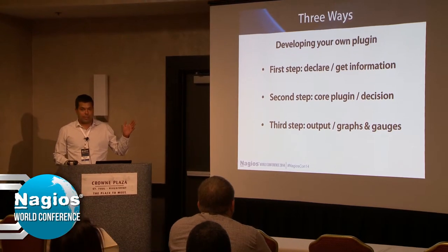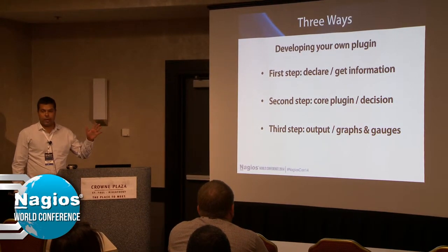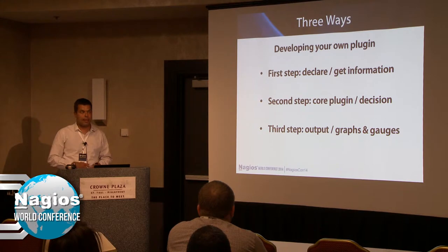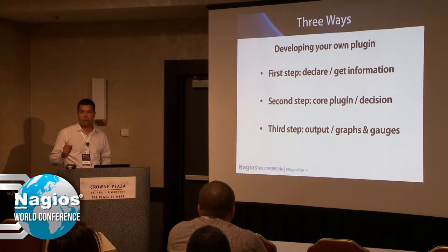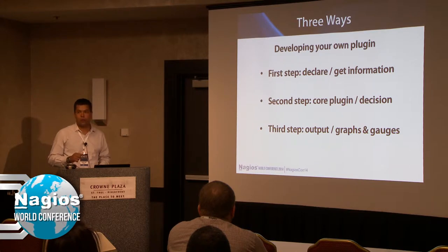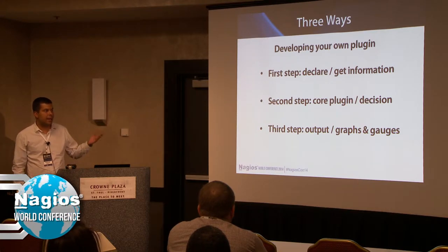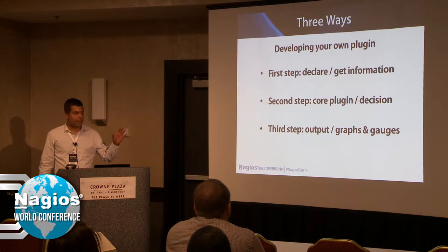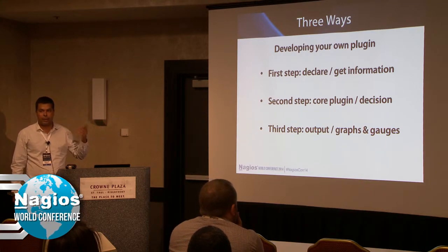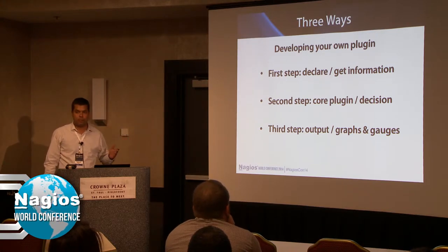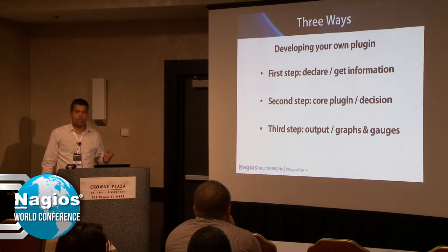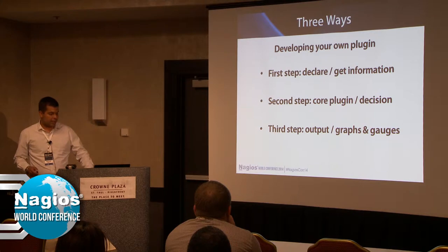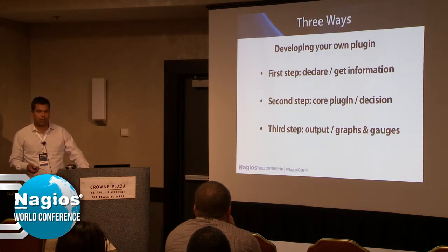Here we have three ways. The first step is to declare and get information. When I need to monitor the system, I need to get information — I can get information from a file, from a URL, from SNMP gets, or other ways. The second step is the core plugin, where you make a decision: OK, warning, or critical. And the third step is outputs — graphs, print statements, or OK, critical, red, or yellow.